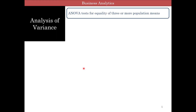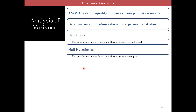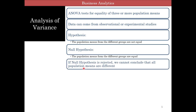ANOVA looks at whether, when we have more than two groups in our factor, there is equality between three or more population means. The data can come from observational or experimental studies. The hypothesis is that the population means from different groups are not equal — similar to your two-sample hypothesis test, which is two-tailed. But now we have more than two groups. The null hypothesis is that the population means from different groups are equal.